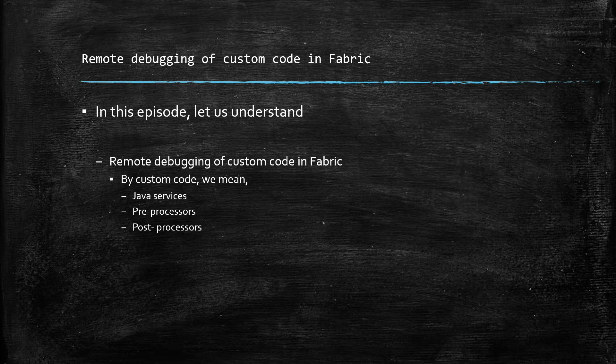So inside these Java services, pre-processors and post-processors, we write some custom code related to our application logic. In this episode, we are going to look at how to do remote debugging of this custom code that is running within the Fabric context, using the source code from Eclipse.